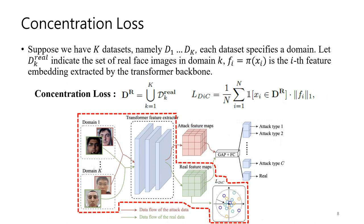The second loss is concentration loss. For all real faces from different domains, we apply L1 loss to centralize their features on the origin of the embedding space. Since the real face patterns are unified while the attack type has infinite possibilities, we merely center the features of real faces and let the spoofing features be distributed in the space.